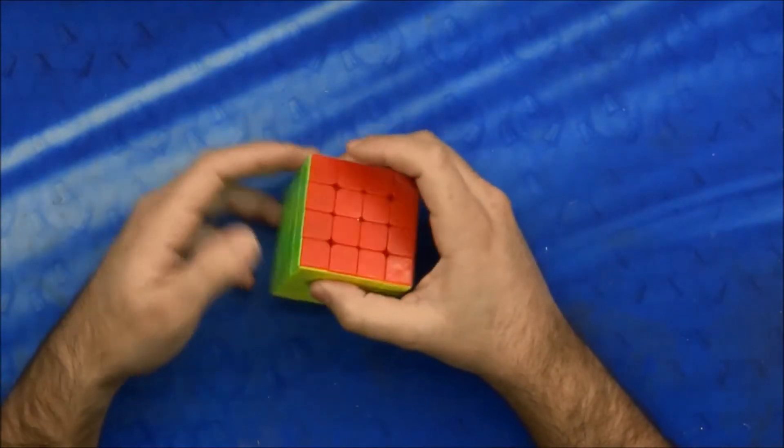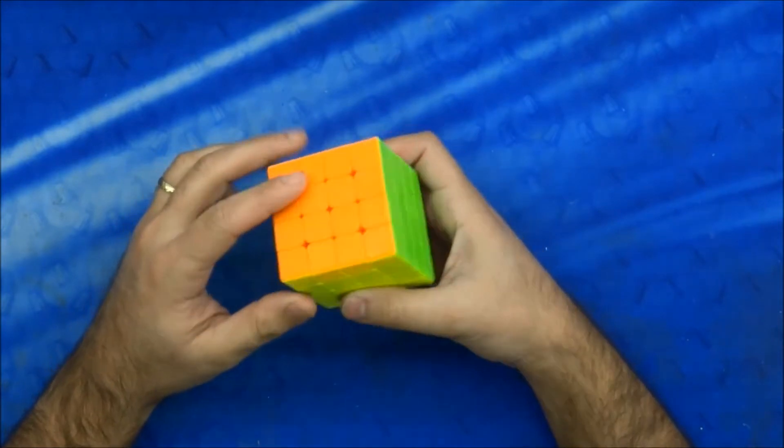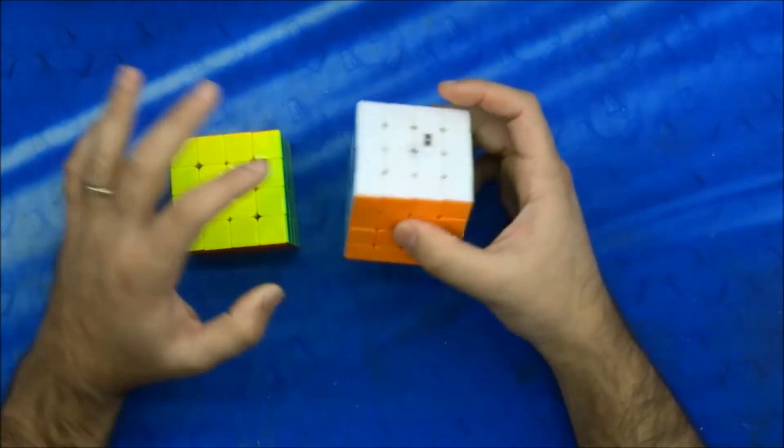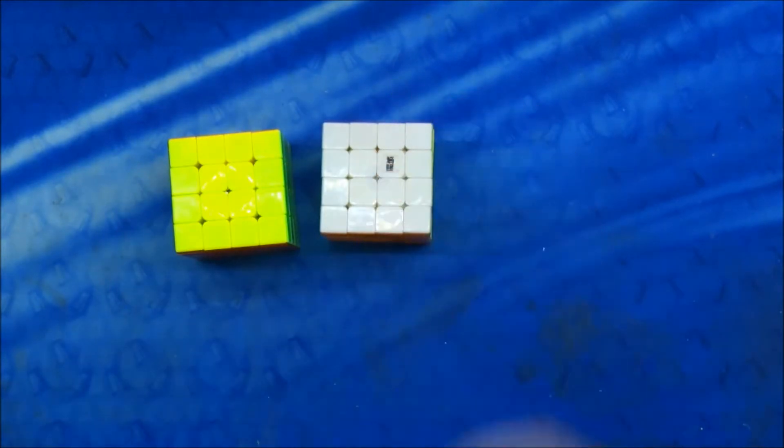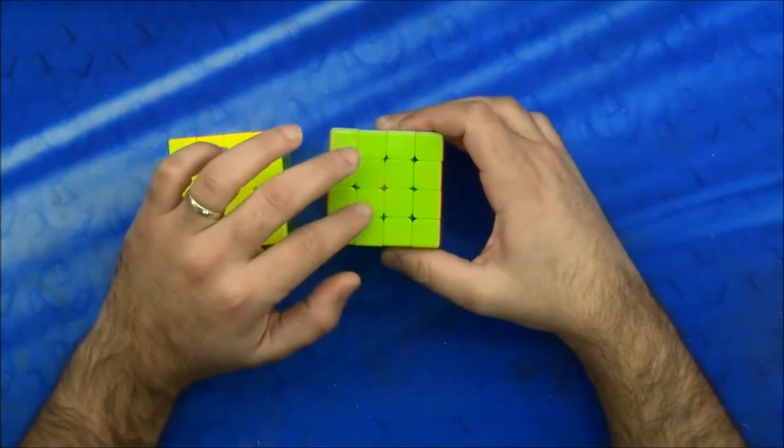As far as color, it's a normal stickerless color. The green, maybe it's a little bit brighter, I'm not sure. The orange is - let's see, I have here the 4x4, the last one that I took. As you can see, this is the Moyu.